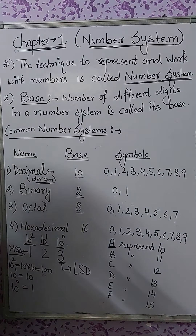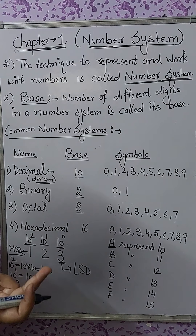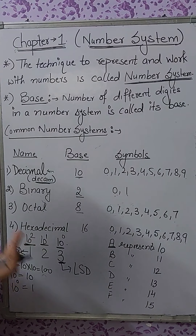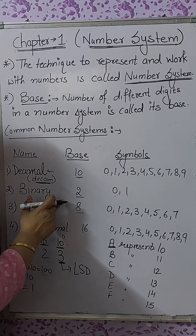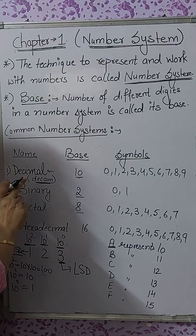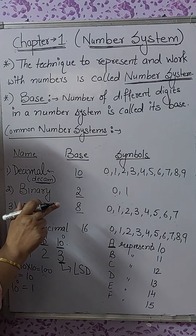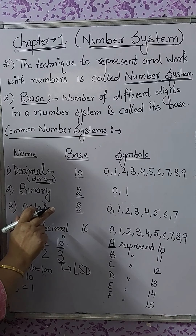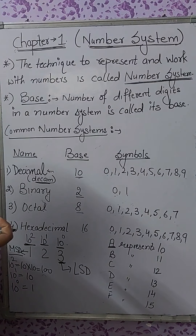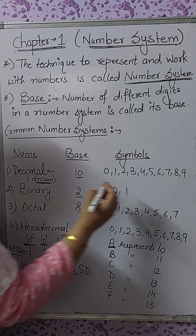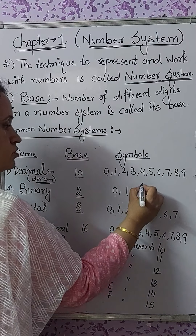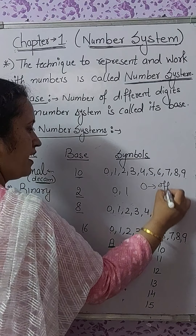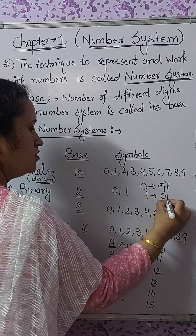Everything in binary is written in the form of 0 and 1. Why does it use only 0 and 1? Because your computer is an electronic machine, and being an electronic machine, it can only represent and understand two states: the off state and the on state. So 0 represents the off state and 1 represents the on state. That is why your computer understands only this number system.